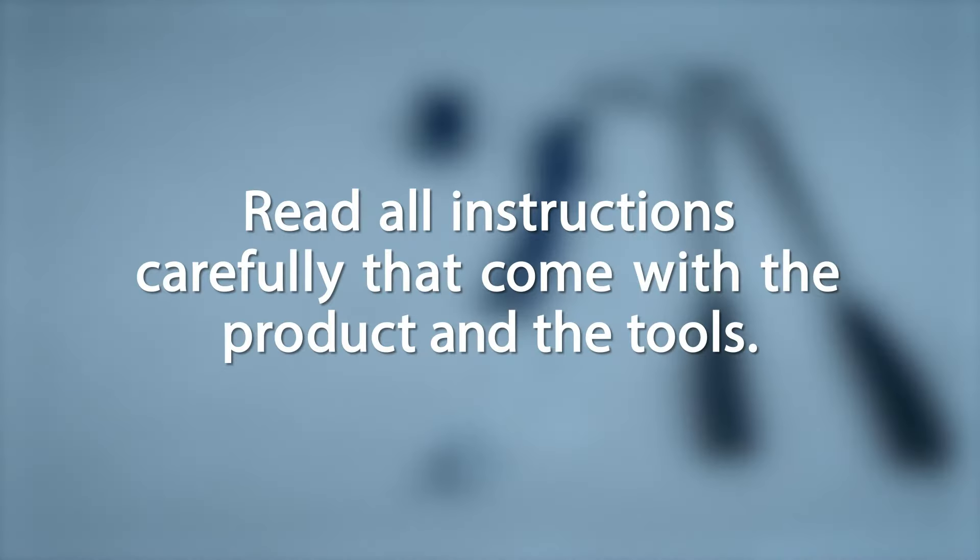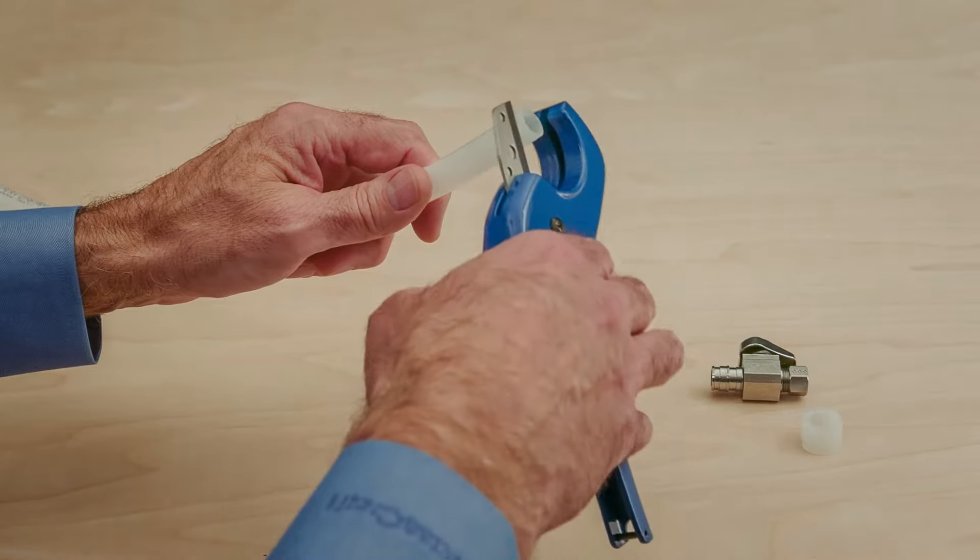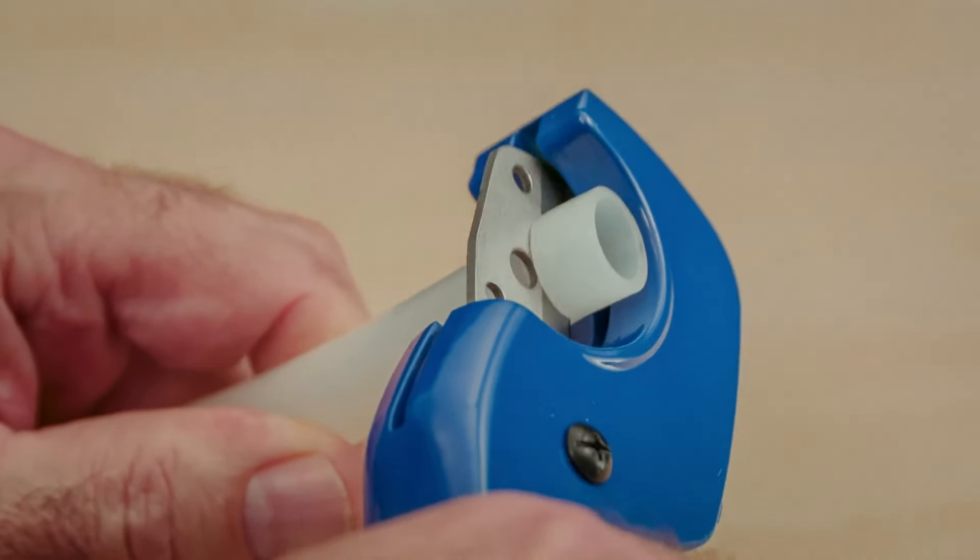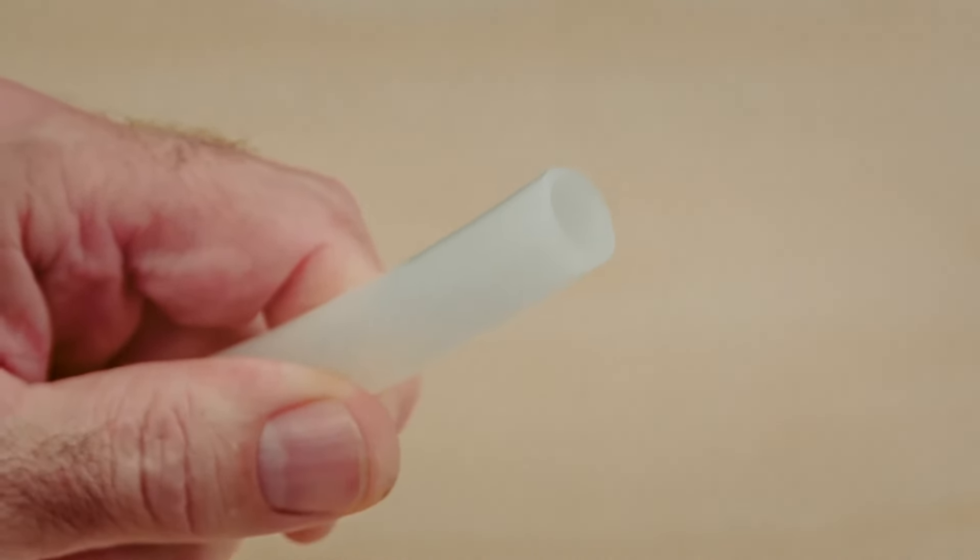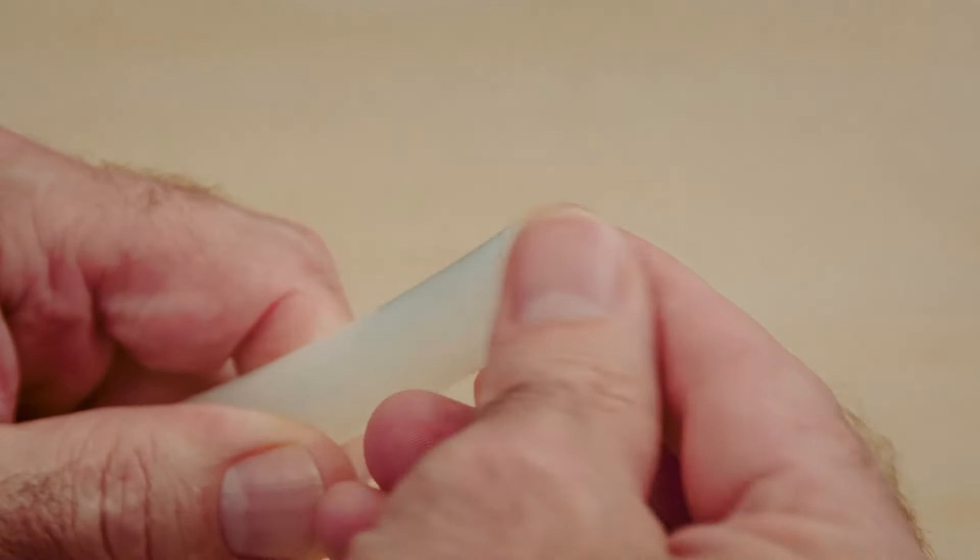Read all instructions carefully that come with the product and the tools. Make sure that the PEX tubing is cut square and free from any damage including dings or dents that may prevent the connection from sealing properly. Inspect the tube to make sure it's free of burrs and other debris.